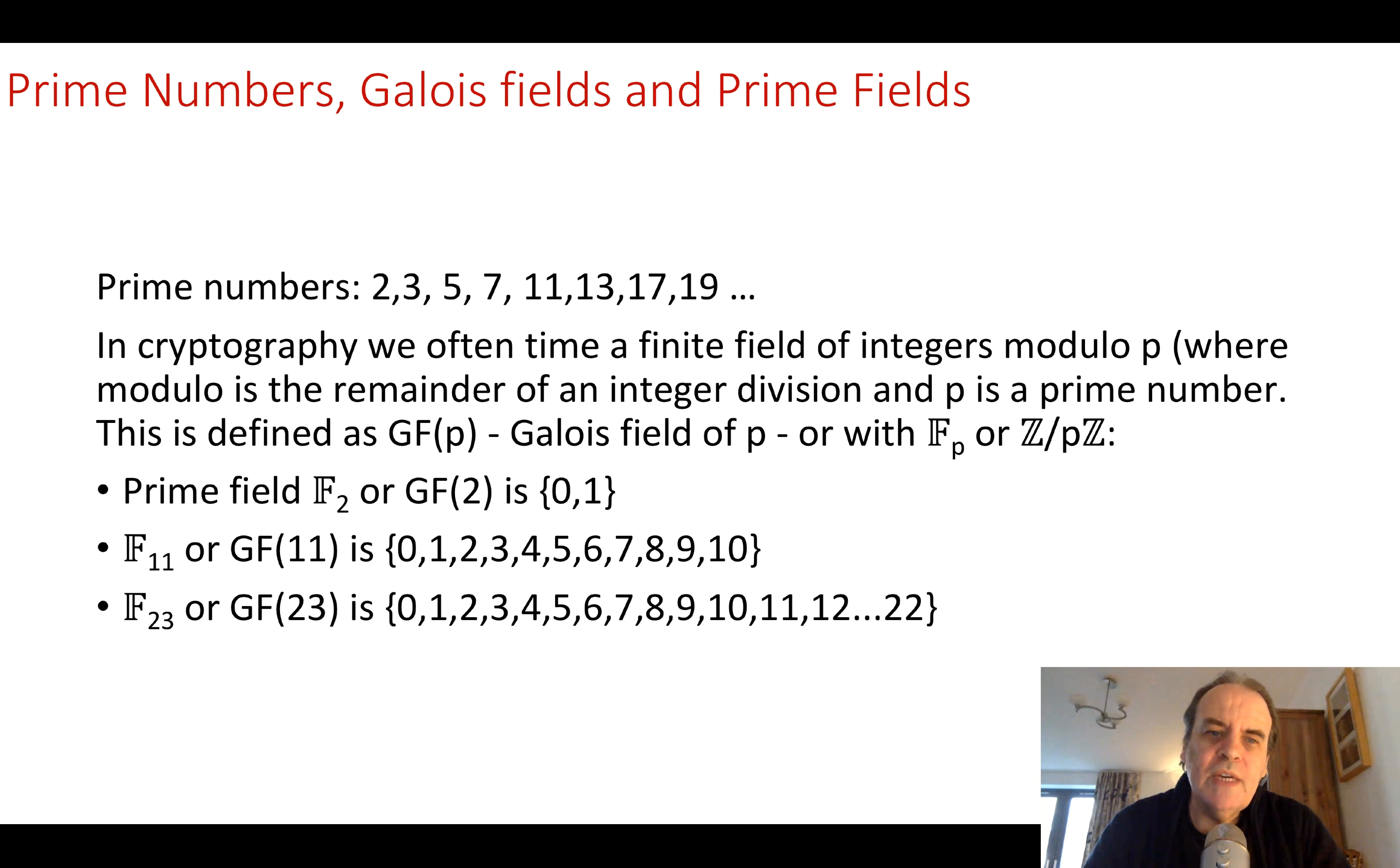In cryptography, we create a finite field of integers modulo p. So p is the modulus operation and it's the remainder of an integer division. p is a prime number. This creates a finite field, which means we will only get a certain number of results.